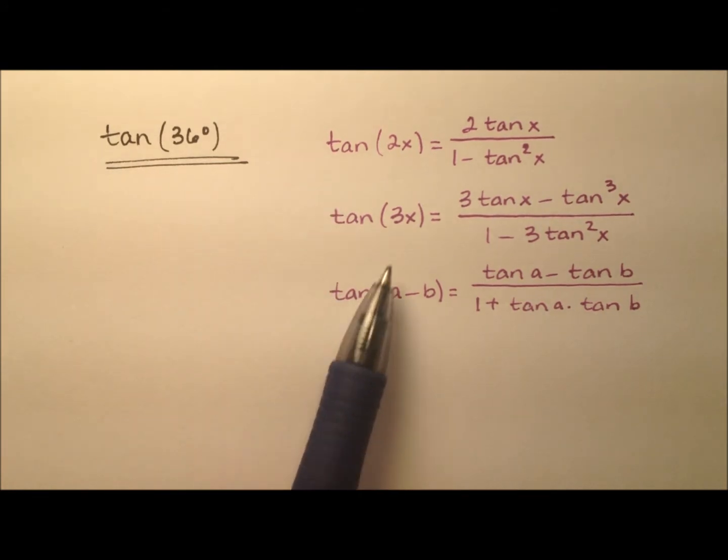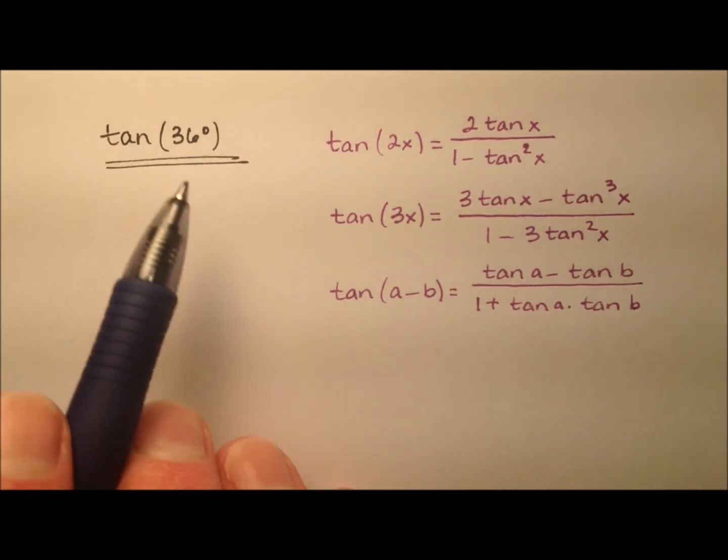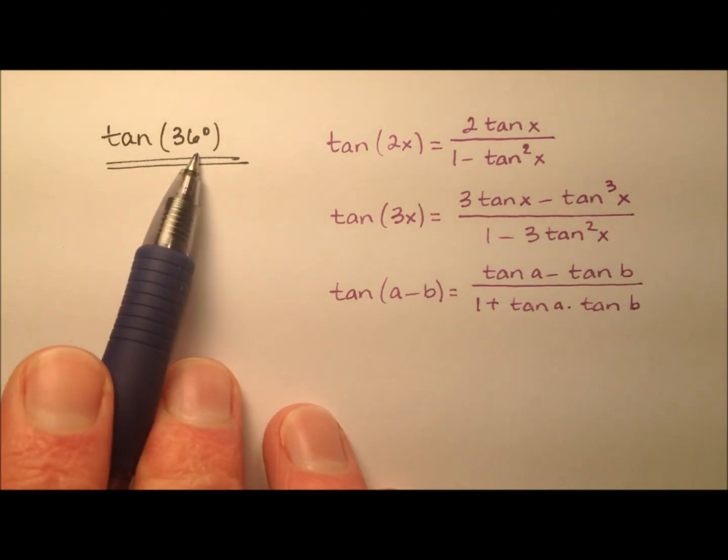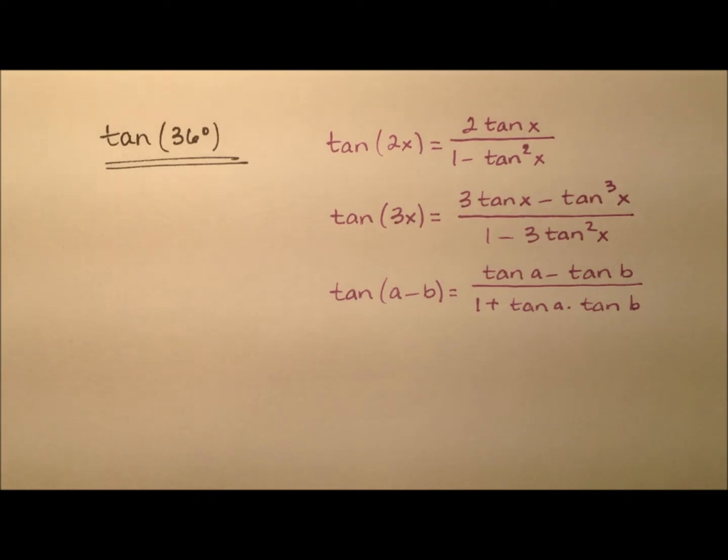And all of them are tangent. So we have the double angle, the triple angle, and this difference identity as well. And interestingly enough, the process that we use to find this exact value for the tangent of 36 degrees will also yield the exact value for the tangent of 72 degrees as well.